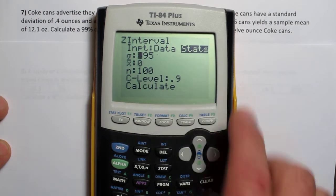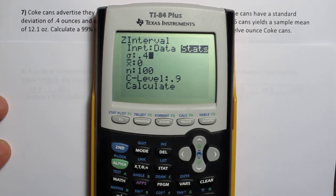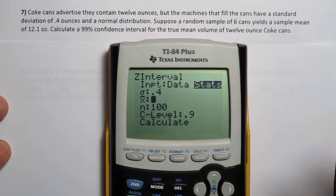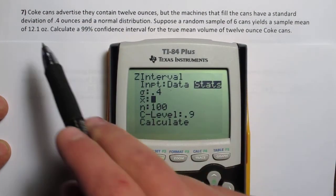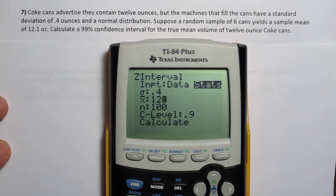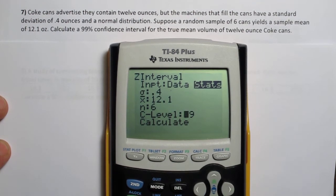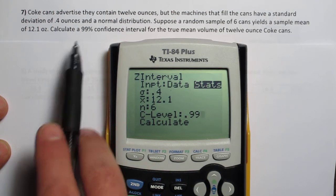So the first thing it asks you for is a standard deviation, it's 0.4 ounces in this case. Next it asks you for your sample mean. It says our 6 cans had a sample mean of 12.1. Finally, the sample size, 6 cans. And our confidence level is 99% in this. So that's what it asks for.